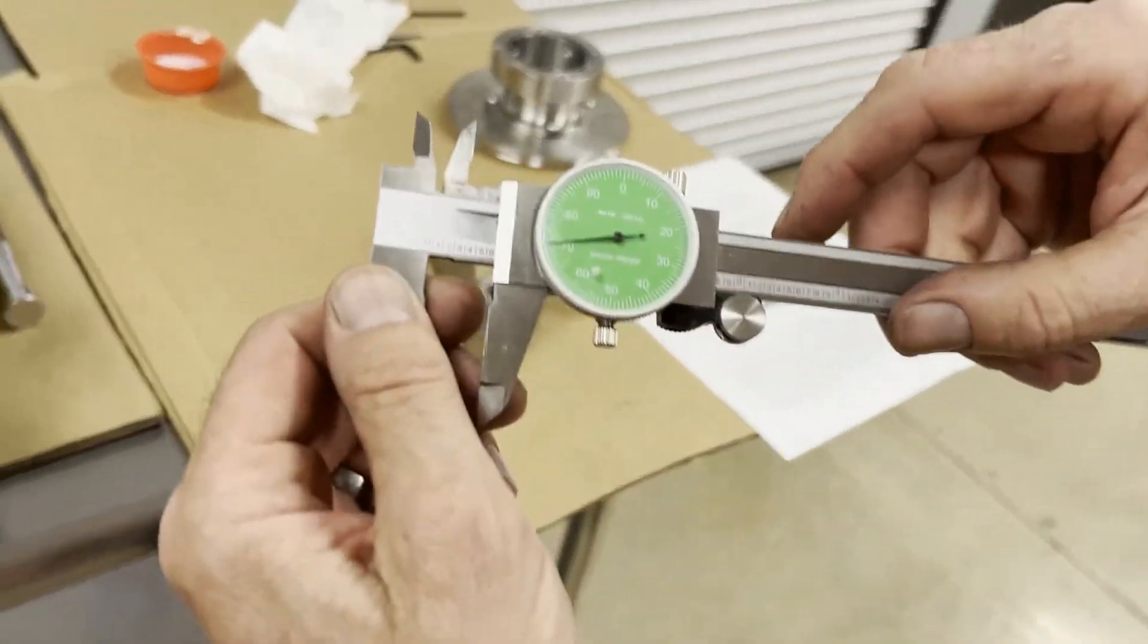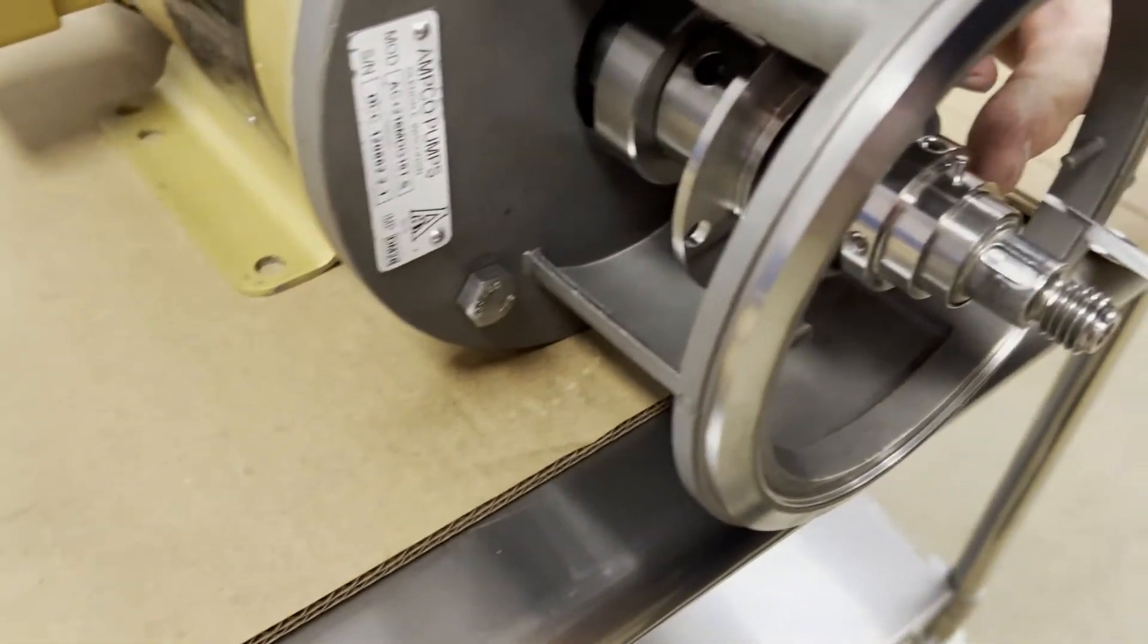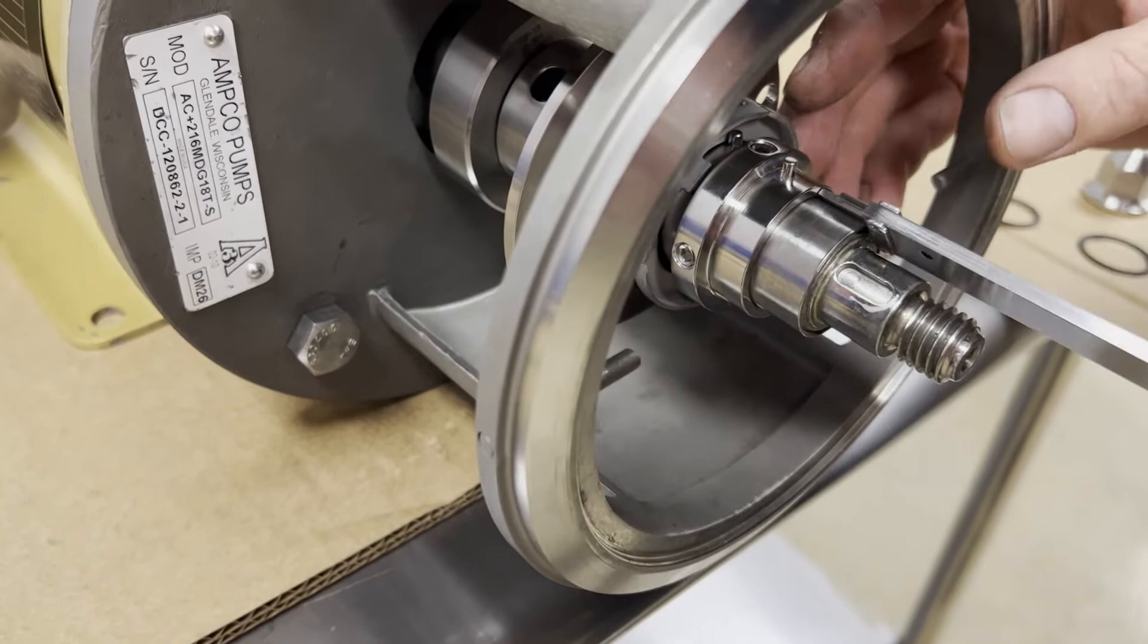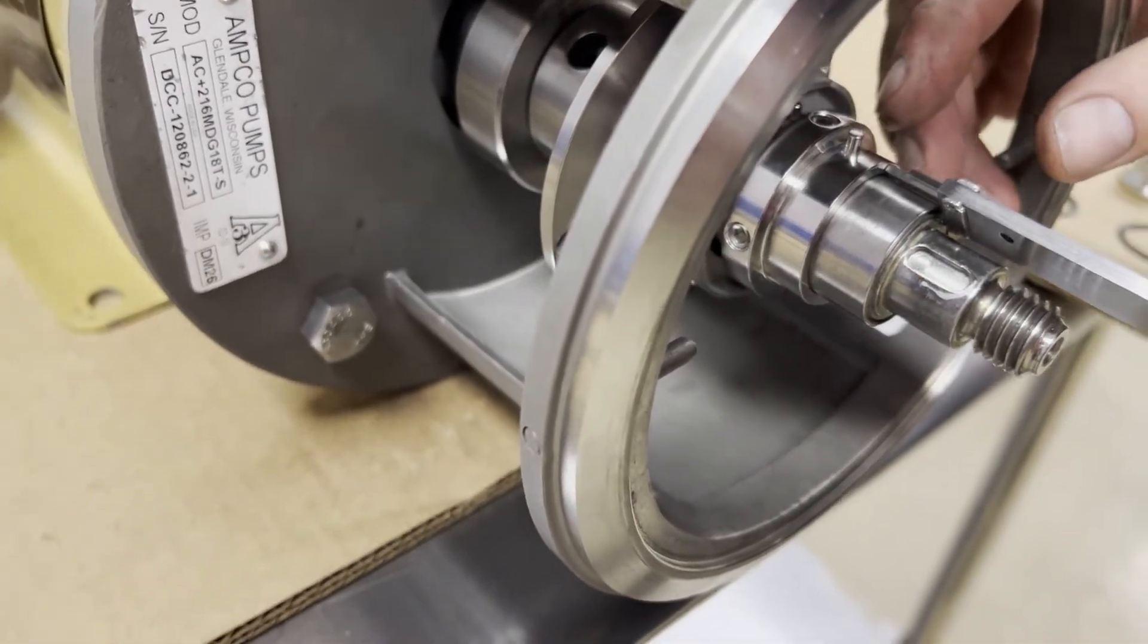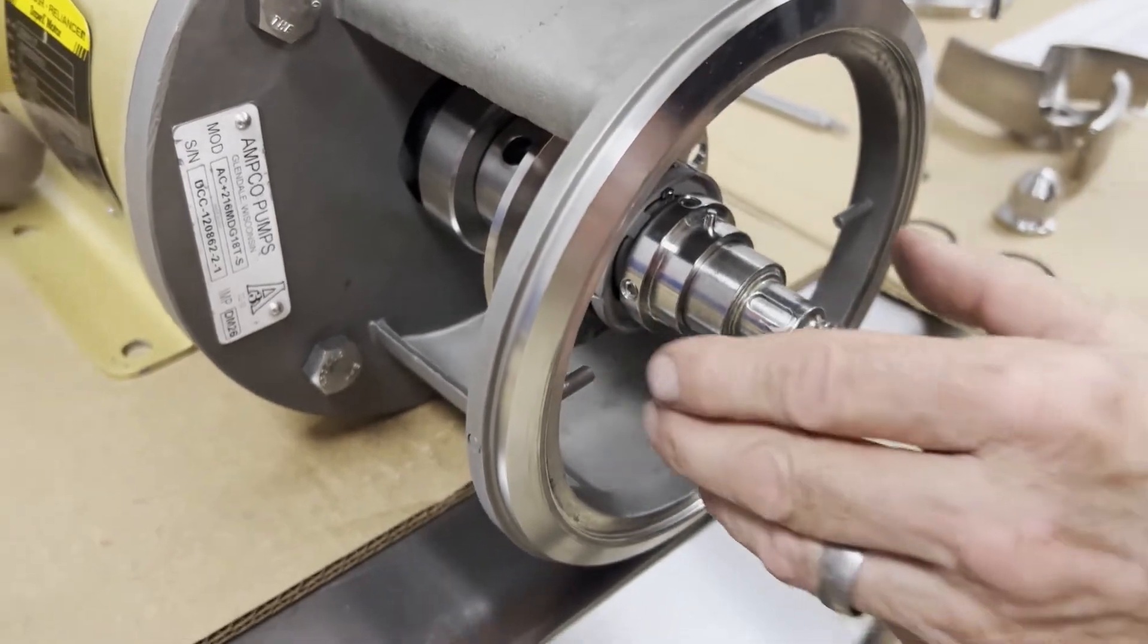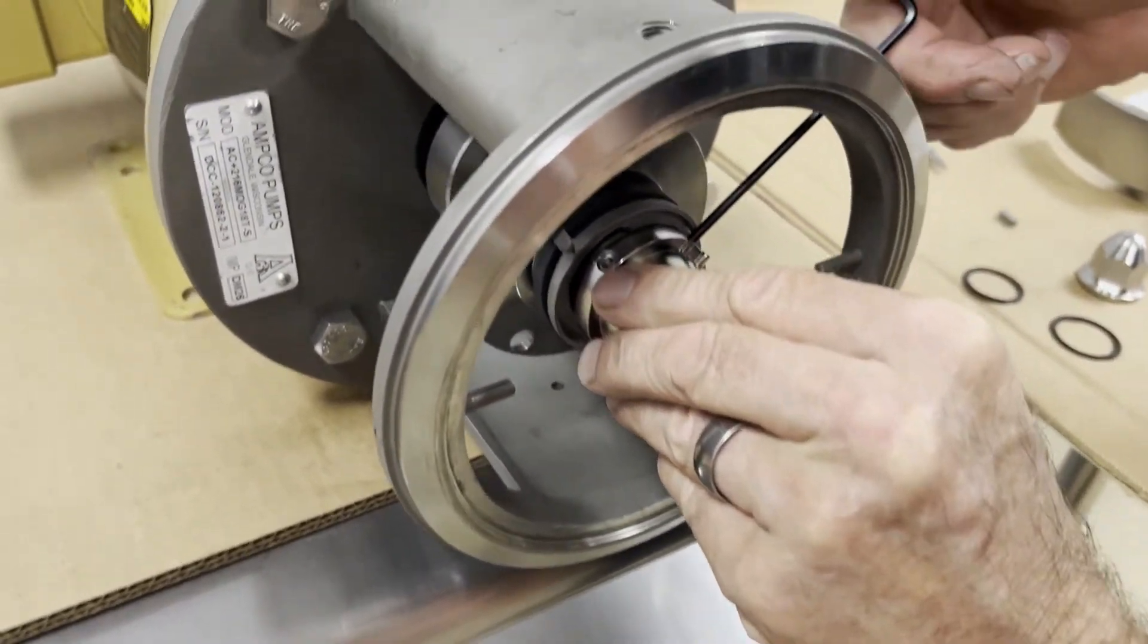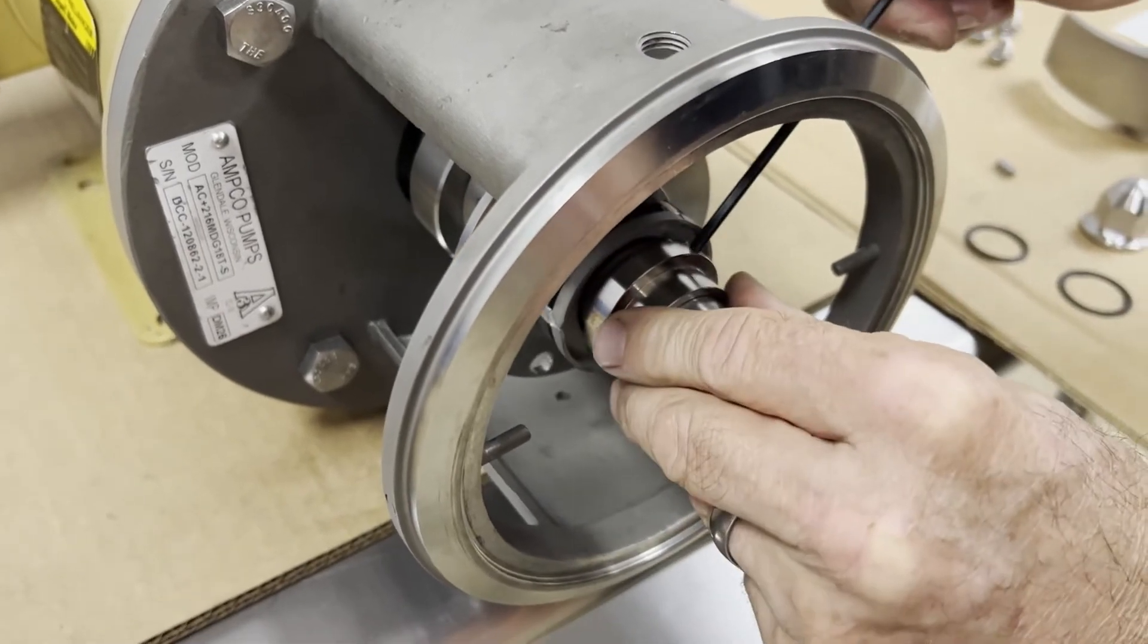So I put my calipers at 0.572 and I'll come in and set that collar at that dimension. Back in. Tighten the set screws - there's two of them.